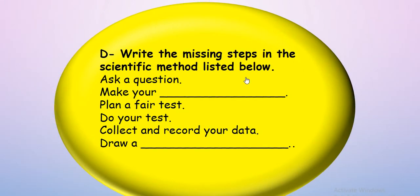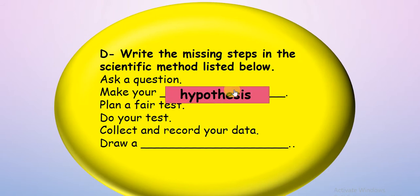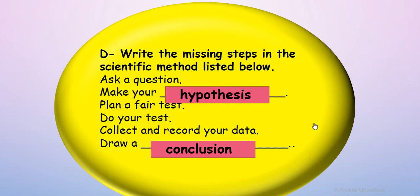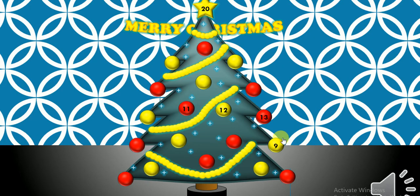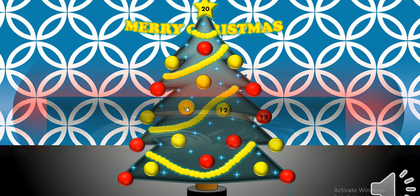Let's try number nine — write the missing steps in the scientific method: ask a question, make your hypothesis — hypothesis is a possible answer to the question — then plan a fair test, do your test, collect and record your data, and the last step: draw a conclusion. Excellent, guys — it's conclusion!